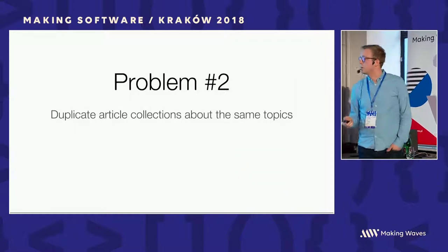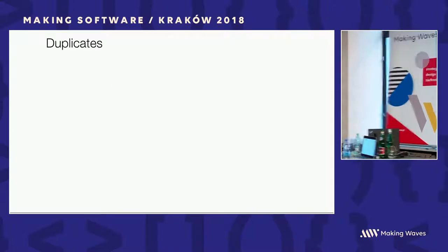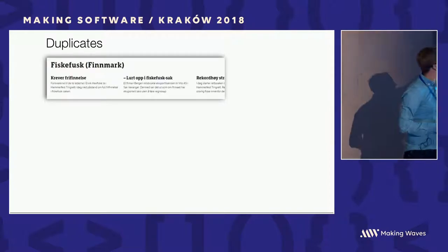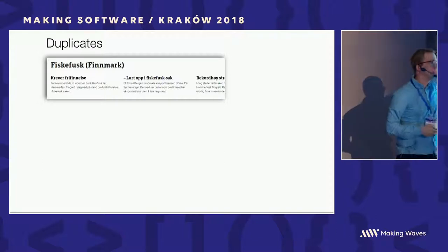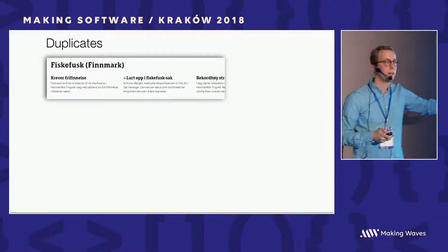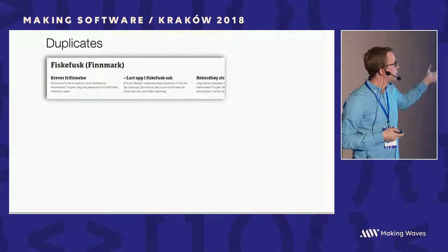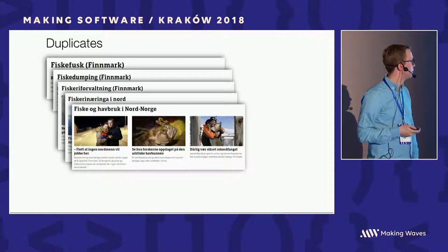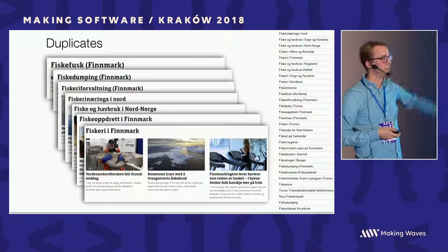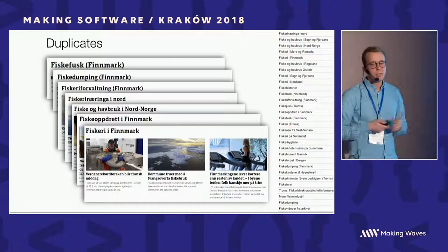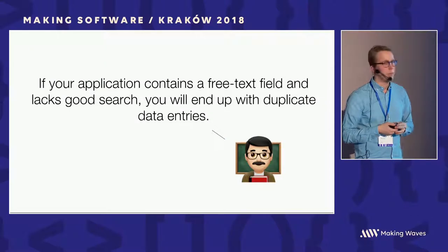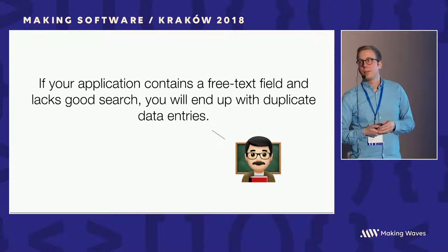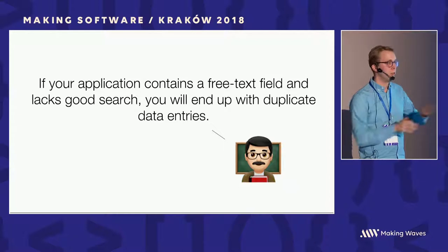We have other problems too. We have a lot of duplicate article collections about the same topic. For example, 'Fisk' is the Norwegian word for fish, and Finnmark is the most northern county in Norway — so there are multiple article collections about fish in Finnmark, one after another. There's a whole bunch of them, all about fishery in Norway. The reason this happens is that the article collection is just a free text field which lacks good search, and if journalists can't find the collection they're looking for, they just create a new one.